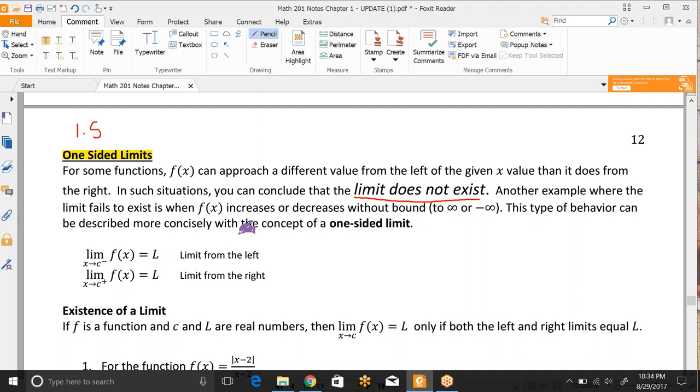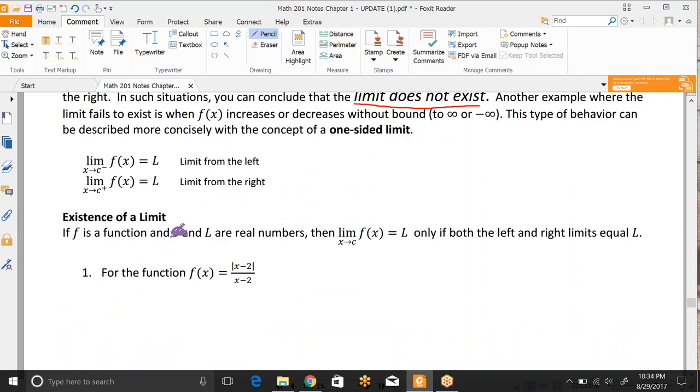This type of behavior can be described more concisely with the concept of a one-sided limit. So the limit of f(x) as x approaches c from the left equals L and the limit of f(x) as x approaches c from the right could also equal L. If that is true, then the limit as x approaches just c would be considered L. So if f is a function and c and L are real numbers, then the existence of the limit is that if you have two different one-sided limits, and they have the same value as what they are approaching, then we know that that is the limit.